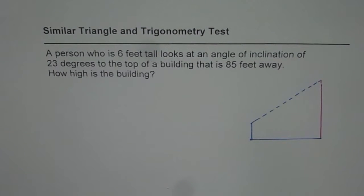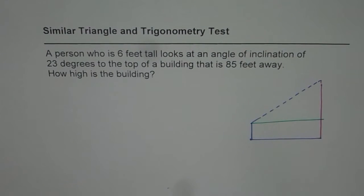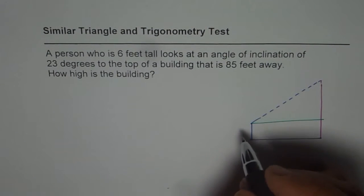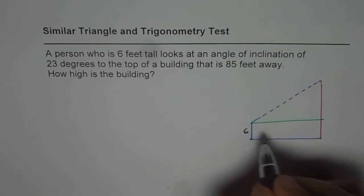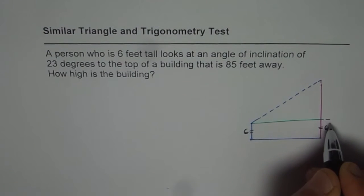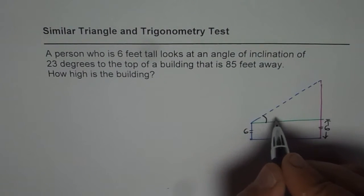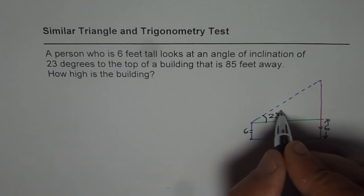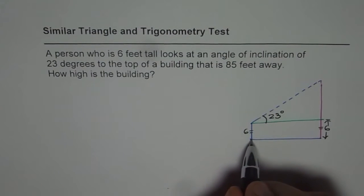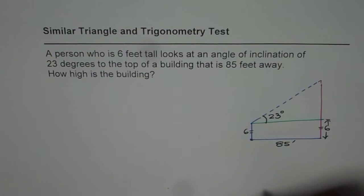So and let me complete it saying that this is the height. So in this particular question it is kind of important to understand that the height of the person is 6. So this is equal to 6. So that distance of the building height is 6. The angle given to us is 23 degrees, correct? And the distance of the base between the building and the person is 85 feet. That is what is given.